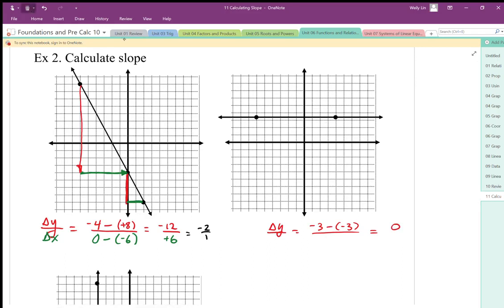My change in x, between any two points, it doesn't really matter what my change in x is, because it's going to be 0 divided by whatever that change in x is. In this case, I could use positive 4 minus negative 6, and that gives us positive 10. 0 divided by anything is 0. So my slope of a horizontal line really is 0.